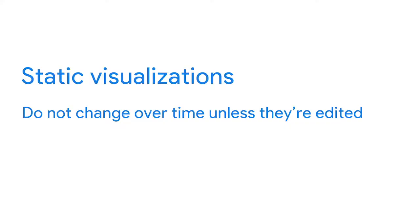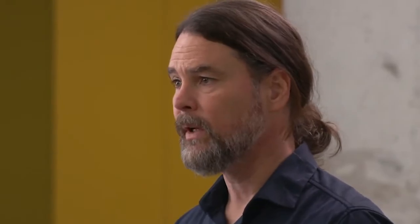So far we've shown that there are lots of choices you'll make as a data analyst when creating visualizations. Each of your choices should help make sure that your visuals are meaningful and effective. Another choice you'll need to make is whether you want your visualizations to be static or dynamic. Static visualizations do not change over time unless they're edited — they can be useful when you want to control your data and your data story. Any visualization printed on paper is automatically static. Charts and graphs created in spreadsheets are often static too.